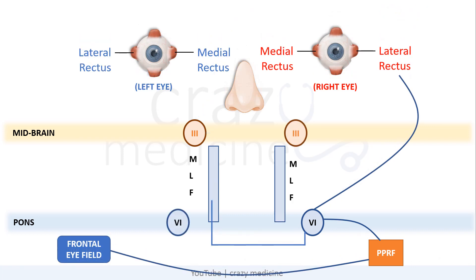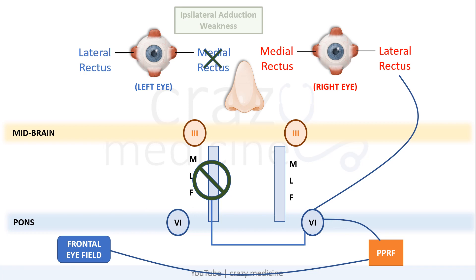Now coming to our topic, INO or internuclear ophthalmoplasia. Imagine we have a lesion in one-sided MLF — for example, a lesion in the left-sided MLF. When there is an MLF lesion on the left side, the left-sided 3rd nerve cannot act, i.e. left medial rectus is non-functional, whose action is to adduct. So the patient cannot look right from the left eye, and therefore there will be same-sided adduction weakness.